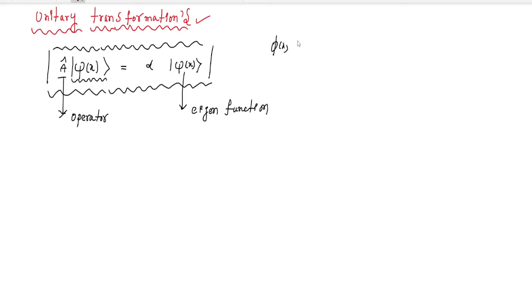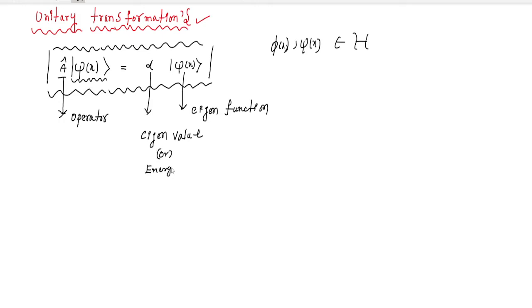So remember, we already discussed these vectors — psi of x — and these all belong to Hilbert space. The constant value here is the eigenvalue, or we can call it in physics the energy value of the system. So this type of equation we are calling an eigenvalue equation.